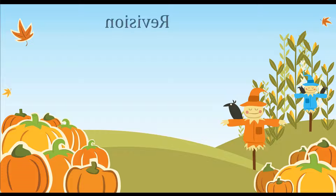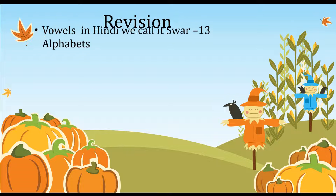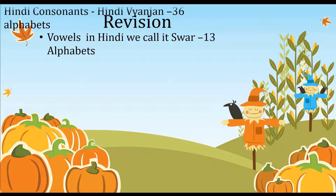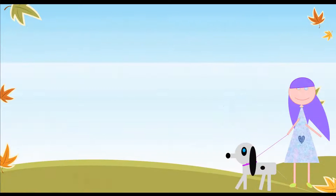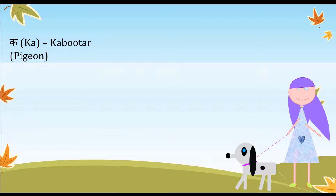We're going through revisions of what we covered in video one. Video one was about understanding how many alphabets, vowels, and consonants we have in Hindi. We have 13 swar (vowels) and 36 vyanjan (consonants), making 49 alphabets in total.